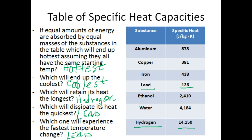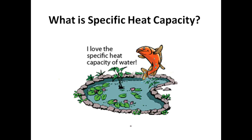Let's go back to the original slide. The fish is saying, 'I love the specific heat capacity of water.' Why would the fish say that? The specific heat capacity of water is relatively high compared to most other substances. This means water will not fluctuate much in temperature over the course of a day, whether left out in the sun or at night. It has a high specific heat capacity, so its temperature will stay relatively stable, keeping this fish pretty happy. I hope this was helpful.